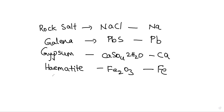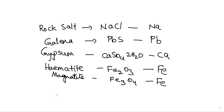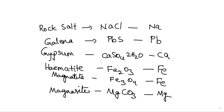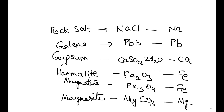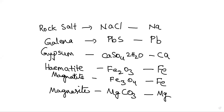Next are Magnetite and Magnesite. The Magnetite formula is Fe3O4. Magnesite is MgCO3 — magnesium carbonate. We'll discuss these with ores in the table.